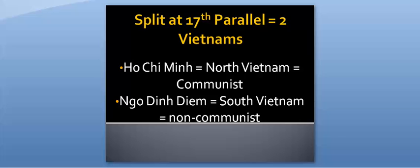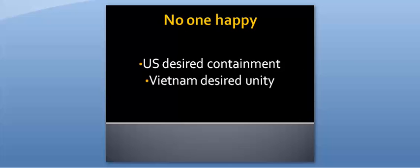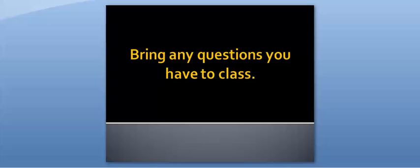Ho Chi Minh was given control of the North, so it was an independent Vietnamese communist country, and Ngo Dinh Diem, a non-communist, was given control of the South, and he was backed by the US. So it didn't really satisfy either side. The US wanted containment to happen and they had lost North Vietnam, and the Vietnamese wanted unity and they had lost South Vietnam — but that sets the stage for more US involvement in Asia. This is not the end, but it is the end of Notes 5.11, so hopefully you learned something, and I will see you in class with any questions.